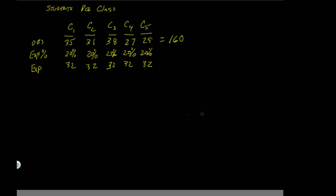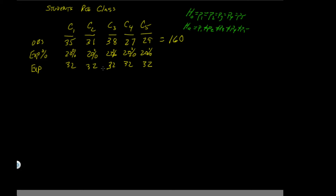So what we're going to do is run a test. But before we do that, we need to set up our hypotheses. We start with the null hypothesis H0, which says that P1 equals P2 equals P3 equals P4 equals P5 — that all of them are equal. Conversely, the alternative hypothesis H1 is that they're not the same: P1 is not equal to P2, P3, P4, or P5. So H0 says they're all equal to the expected value of 32, and H1 says they are not.